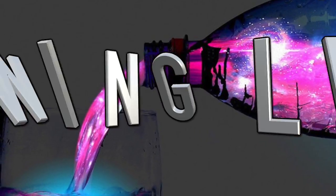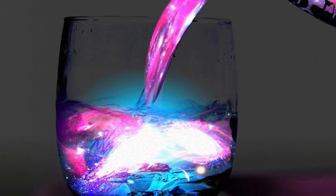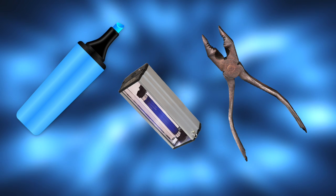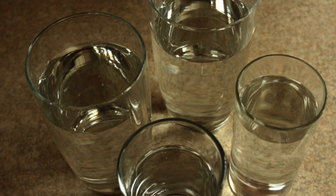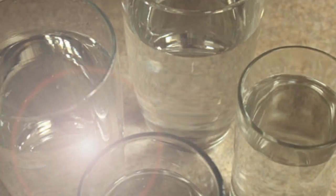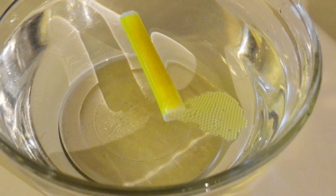Next up we have glowing liquid. This trick will allow you to make your very own magic glowing liquid. For this you're going to need four highlighter pens, pliers, and a UV light. First, fill four glasses with water most of the way but leave a little bit of room on top.